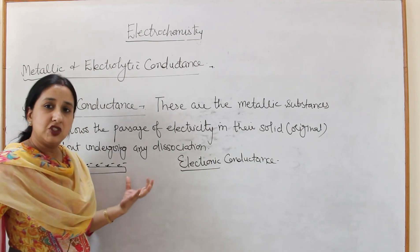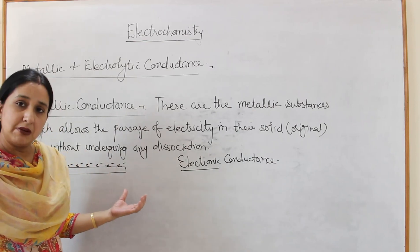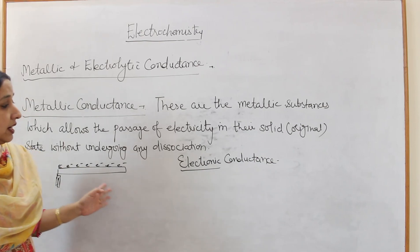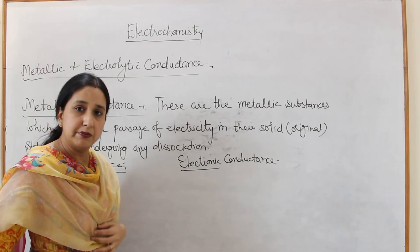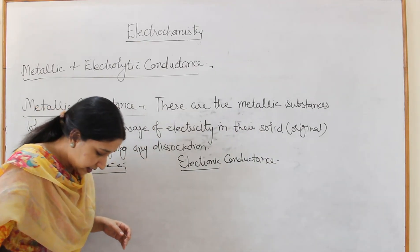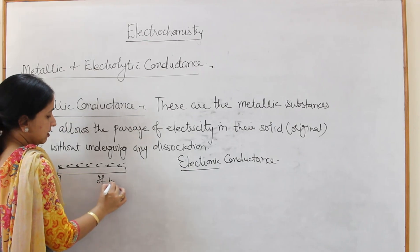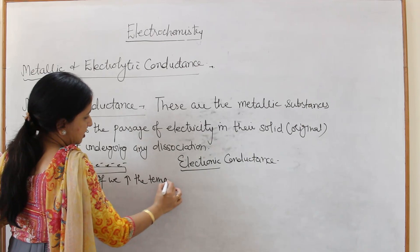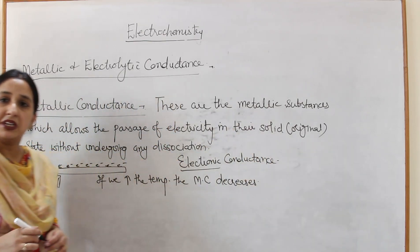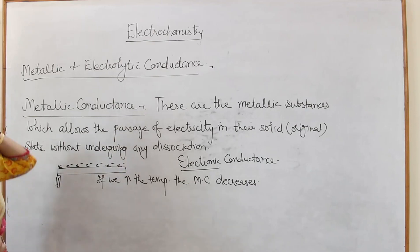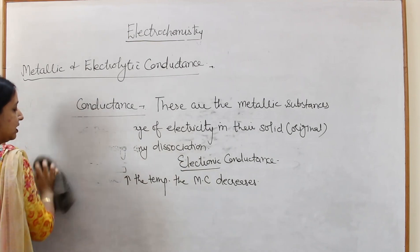Metallic conductance depends upon the nature of the metal, the temperature, and the number of electrons. One important exam question: how does metallic conductance vary with temperature? If we increase the temperature, metallic conductance always decreases.